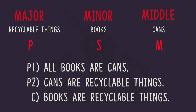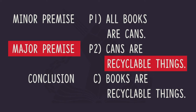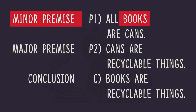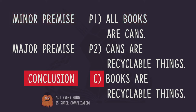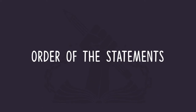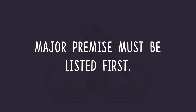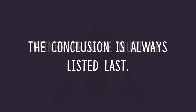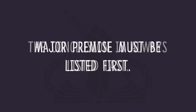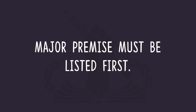Now let's move on to naming and ordering statements. We are now in a position to name the statements. The major premise is the premise that has the major term in it. The minor premise is the other one, and you'll notice it will always have the minor term in it. And then finally we have the conclusion. When we write a categorical syllogism in standard form we have to use a particular order: the major premise is always listed first, the second premise is always the minor premise, and then we have the conclusion. The key thing is you always list the major premise first.